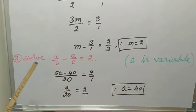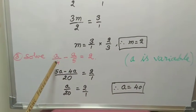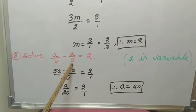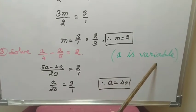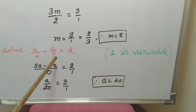Similarly, let us do another problem. Solve A by 4 minus A by 5 equal to 2. In this problem, A is variable. Now, other numbers are constants.